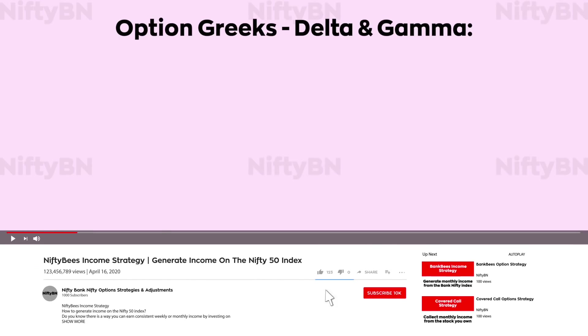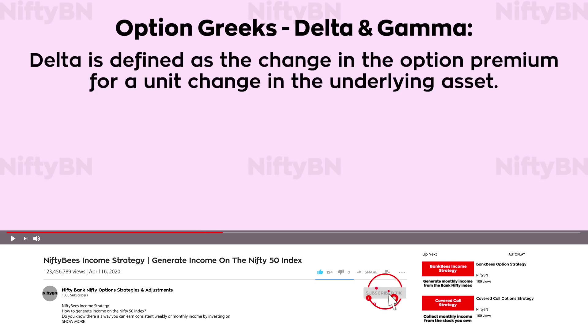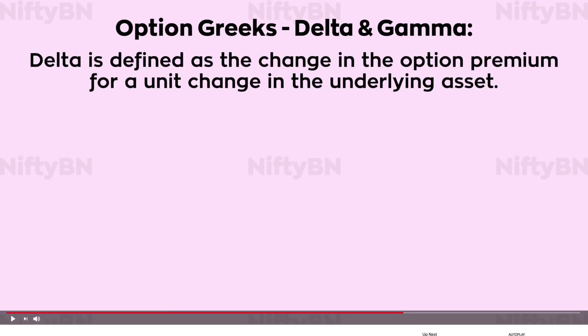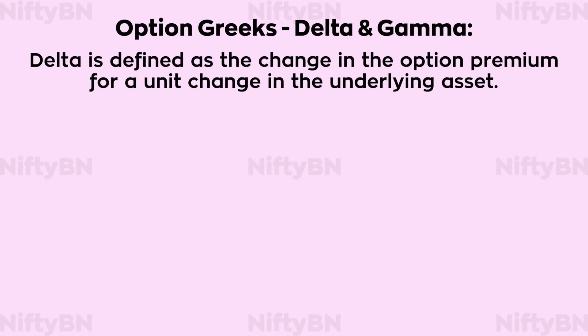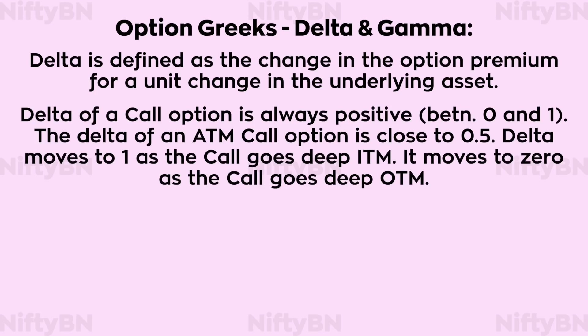As most of you must be knowing, Delta is defined as a change in the option premium for a unit change in the underlying asset. Delta of a call option is always positive — it is between 0 and 1. The Delta of an at-the-money call option is close to 0.5. Delta moves to 1 as the call goes deep in the money, and it moves to 0 as the call goes deep out of the money.